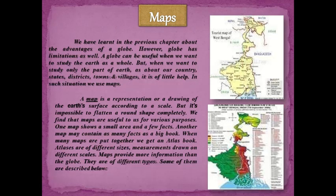We have learnt in the previous chapter about the advantages of a globe. However, a globe has limitations as well. A globe can be useful when we want to study the earth as a whole, but when we want to study only a part of the earth — such as our country, states, districts, towns and villages — it is of little help. In such situations, we use maps.